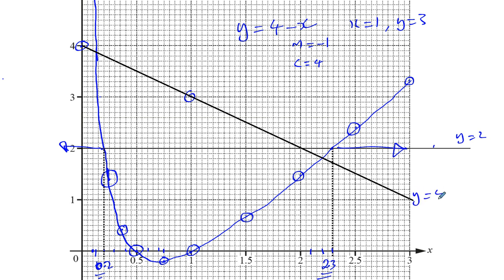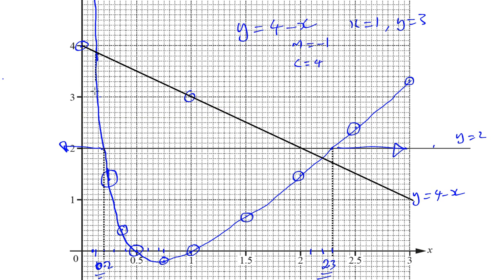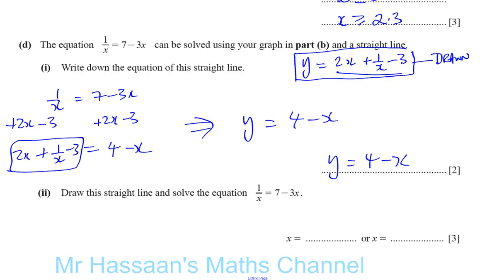We can solve the equation by finding where these lines intersect. My graph isn't 100% accurate but let's see. It looks like I've got the values: 0.15 is one intersection point, and the other is approximately 2.2. So the solutions are x equals 0.15 and x equals 2.2.